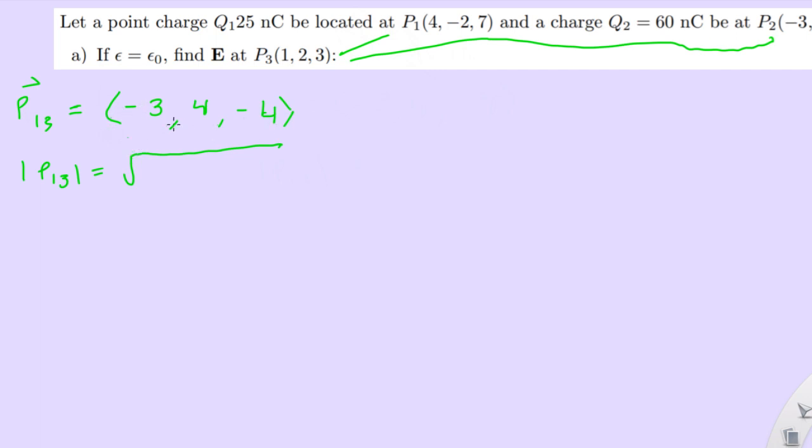So that would be this just in a Pythagorean. So you just square every element, and then you square root it. This is really negative 4 squared, but realize that doesn't matter. Actually, I'll put it just so you guys don't get confused. Square root, so that's 9 plus 16, plus another 16.